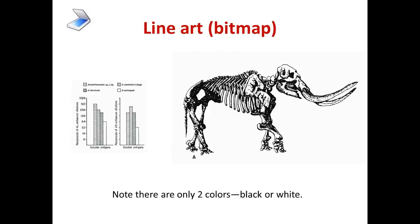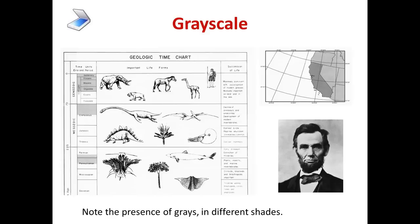Line art looks like this — it's either all black or all white, so usually it's graphs, but also illustrations like this mastodon. There are only two colors: black or white. Grayscale has black and white but also gray things in-between — different shades of gray that you have to preserve in order to show the information that's in the illustration.